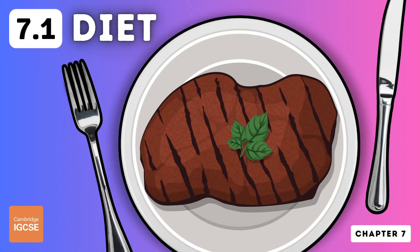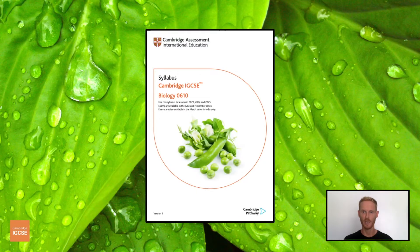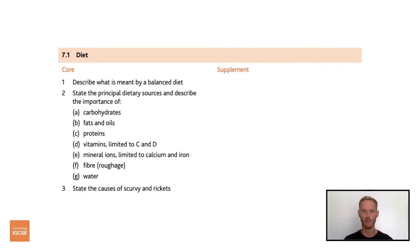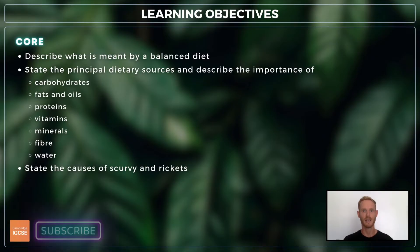Hello and welcome to another complete Cambridge IGCSE biology lesson, where you'll learn absolutely everything you need to know on topic 7.1, diet. We'll be following the Cambridge syllabus exactly. For topic 7.1, you need to describe what is meant by the term balanced diet, state the main dietary sources, describe the importance of the different nutrient groups, and state the causes of scurvy and rickets.